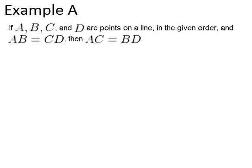In this video, we are going to work on two-column proofs by doing one example together. In this problem, it says if A, B, C, and D are points on a line in the given order, and AB equals CD, then AC equals BD.